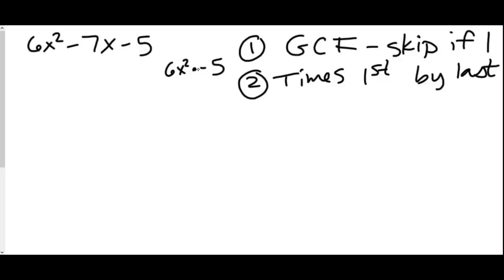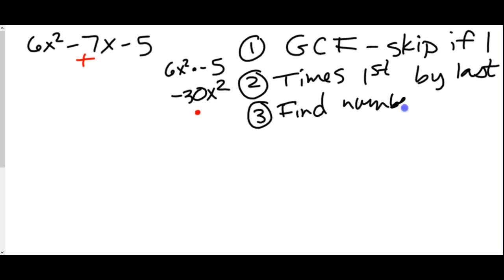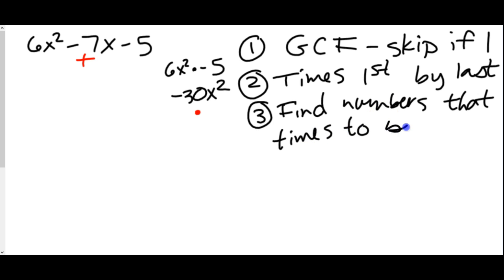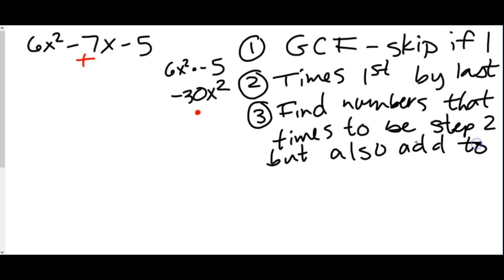If I multiply this out, 6x² times negative 5 is negative 30x². Now the process will be similar to before — we have to figure out what multiplies to be negative 30x² and adds to be negative 7x. We need to find numbers that times to give step 2 but also add to the middle term. If we can figure it out right off the bat, we don't necessarily have to make the full list.